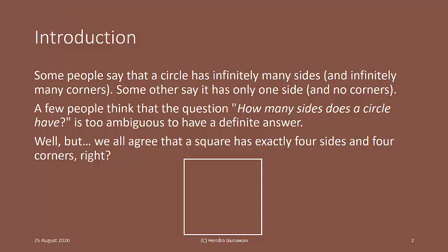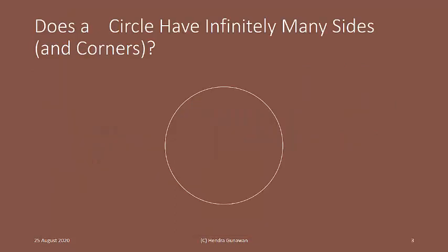Well, but we all agree that a square has exactly four sides and four corners, right? Does a circle have infinitely many sides and corners? How about half circle? Is this point a corner?